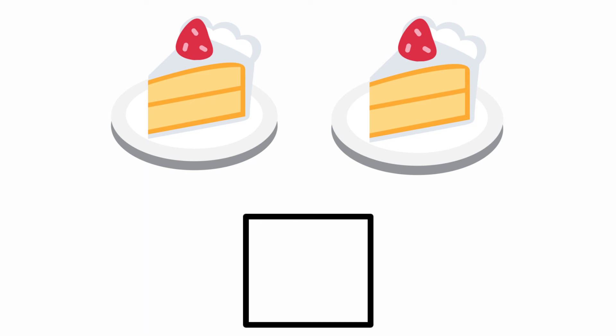Look at the last objects. They are pastries. Yes, they are pastries. 1, 2. There are 2 pastries. So we are going to write number 2.